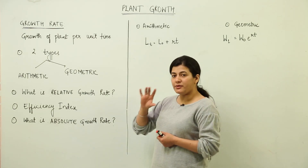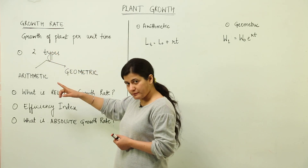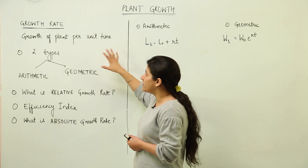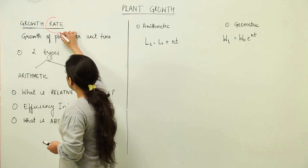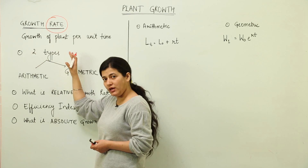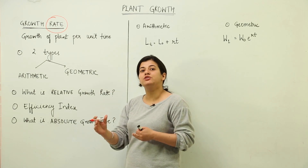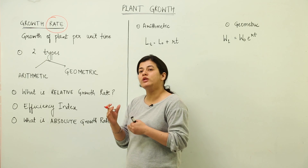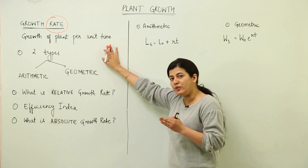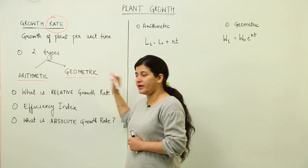What is growth rate? Growth rate is the growth of a plant, or a particular plant tissue or organ, per unit time. Whenever we use the word 'rate,' it involves time — so growth rate is the growth a plant shows in a given time frame. When we study growth rate, we come across two types: arithmetic growth rate and geometric growth rate.